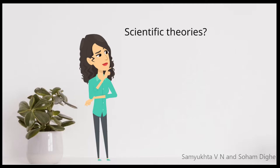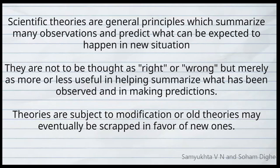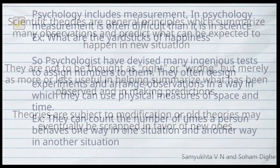Scientific theories are important tools for organizing observed facts. Scientific theories are general principles which summarize many observations and predict what can be expected to happen in a new situation. They are not to be thought of as right or wrong, but merely as more or less useful in summarizing observations and making predictions. Theories are subject to modification, or old theories may eventually be scrapped in favor of new ones.